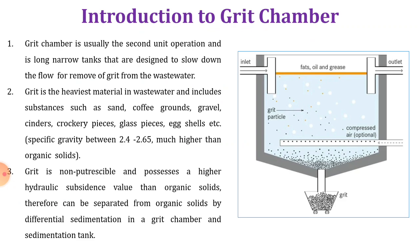Let us discuss the component and significance of the grit chamber. As discussed in the previous video on unit operations and unit processes, the grit chamber is used for removing grit — sand and grit particles, or particles heavier than water. The entire operation involves physical separation of particles or impurities present in the wastewater, so the grit chamber is included in the preliminary treatment operations.